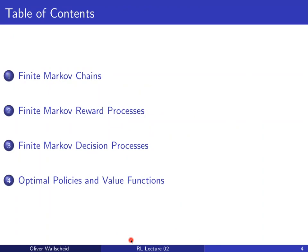Today's agenda is as follows. We will start with the finite Markov chain — Markov models without any actions, just a random process with no possibility to interact. Then we introduce rewards to that random process, which is called the finite Markov reward process. Third, we introduce finite Markov decision processes by adding actions, allowing an agent to interact with the environment. Finally, we look at how to retrieve optimal policies and optimal value functions for such MDP problems.